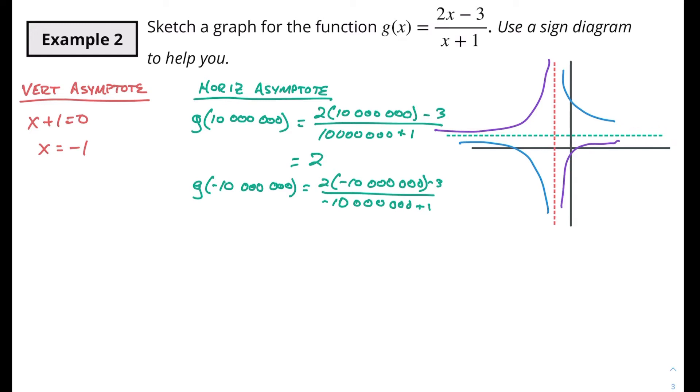So our horizontal asymptote is gonna be at y equals 2. So we'll put y equals 2 here. We'll put x equals negative 1 there. So now we have to find our x and y intercepts to determine are we purple or are we blue.